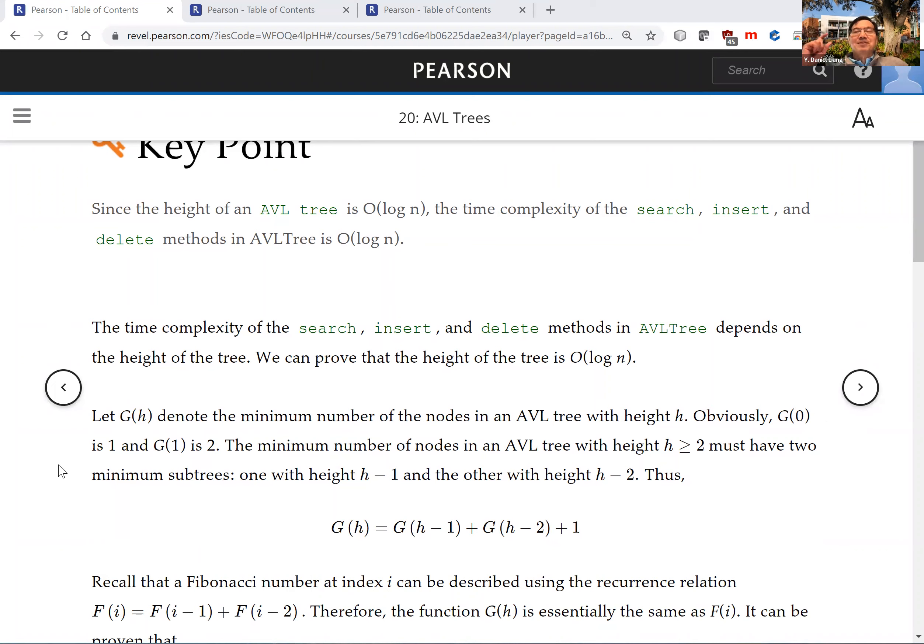Therefore, G(h) equals the minimal number of nodes in the first subtree at height h minus one, plus the other subtree at height h minus two, plus one for the root node itself. So you have two branches - left and right subtrees - plus one.